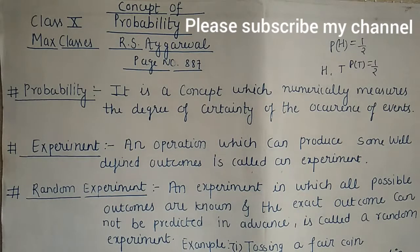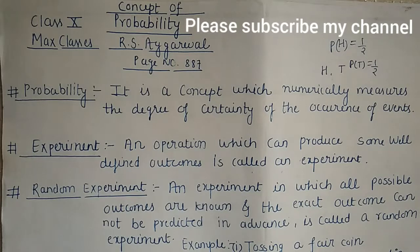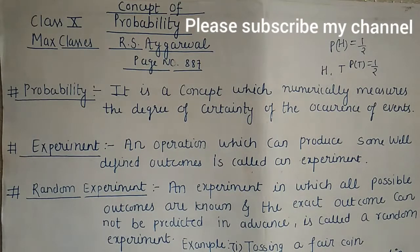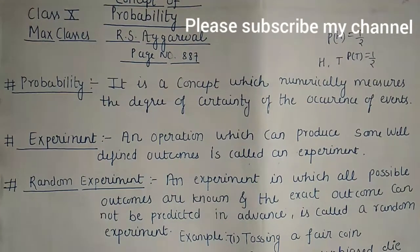Another example: if a box has balls of three colors — suppose red, green, and blue — and we draw one ball, it could be red, green, or blue. When we draw a ball, we have well-defined outcomes: only those three colors will come. We will not get a purple ball that isn't in the box. Whatever color of balls are in it, only that outcome will come — a well-defined outcome. So we call that an experiment.